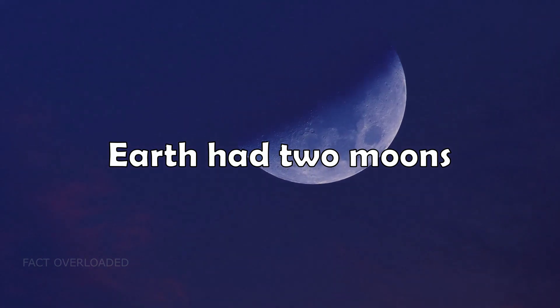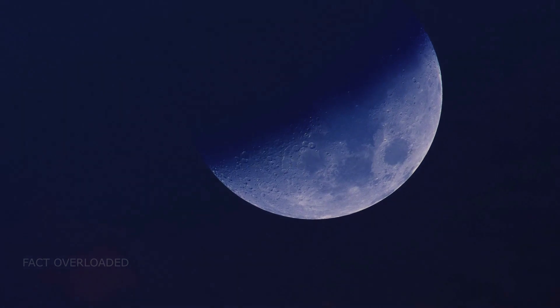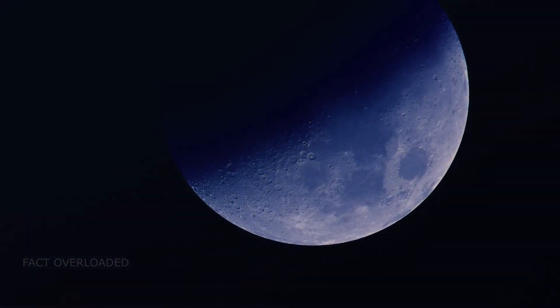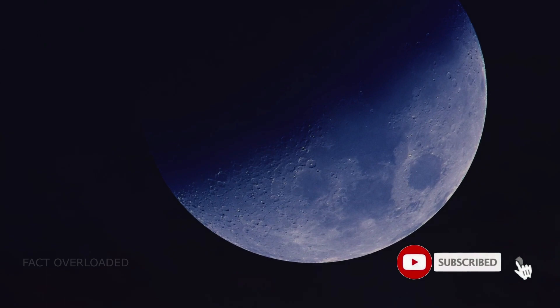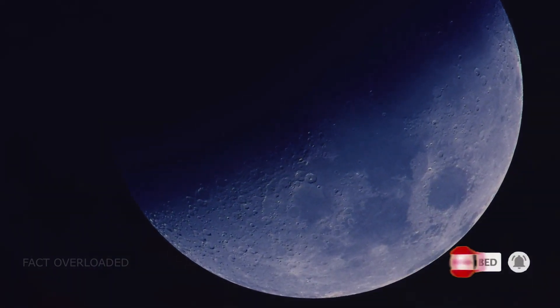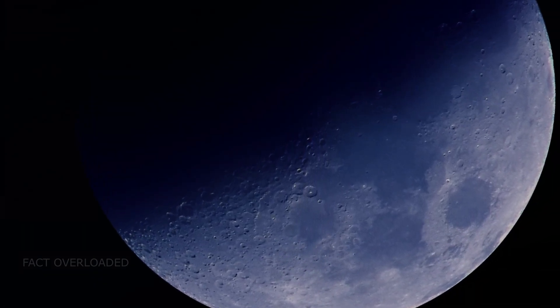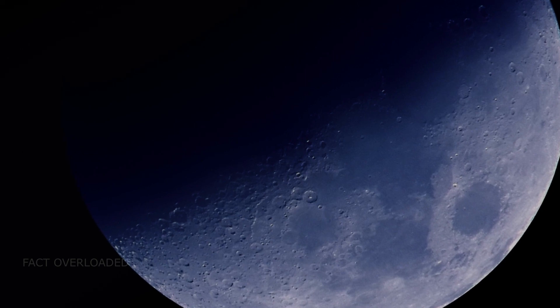Earth had two moons that merged to form a single moon. Can you imagine? Once upon a time, Earth was the owner of two moons. According to some researchers, these two moons of Earth slammed into each other and formed a single moon. This single moon is what we see today as a lunar satellite of Earth. This theory of two moons justifies the cause why two sides of the moon have different interfaces.